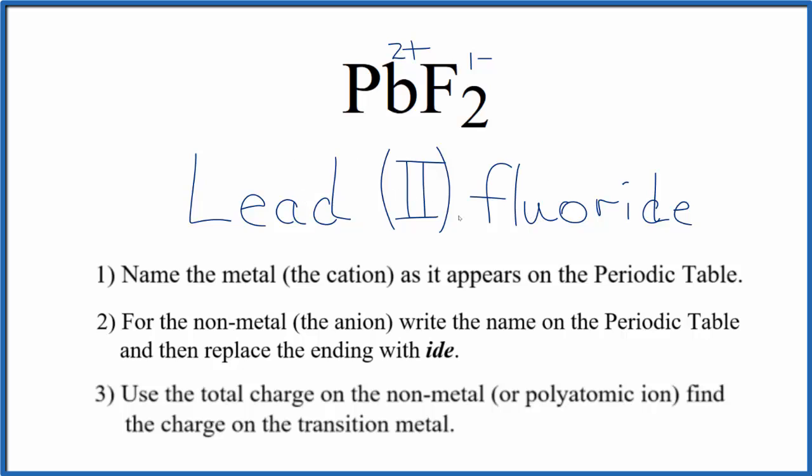If you were given the name lead(II) fluoride and asked to write the formula, you know the lead would be 2 plus because of the Roman numeral. The fluoride ion is always 1 minus, so you need two of those.